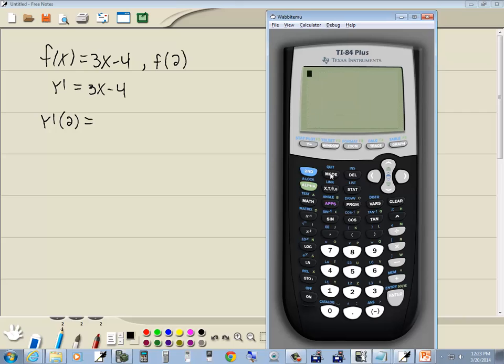I'm going to exit out. I'll do second mode. And we're going to type in y1 of 2. So we're going to go to our vars. We'll go to our y vars. We want to go into function. And that's where you'll see your function notation. So there's our y1.